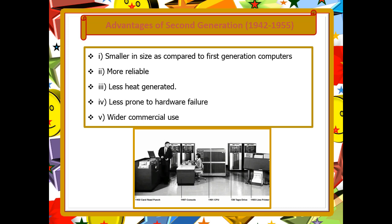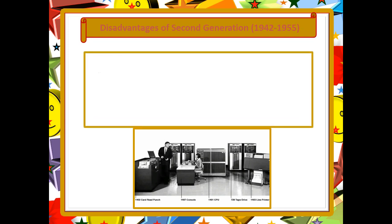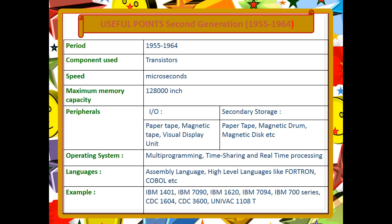The disadvantages of second generation computers are that they still produced a lot of heat and required air conditioning to manage the temperature.